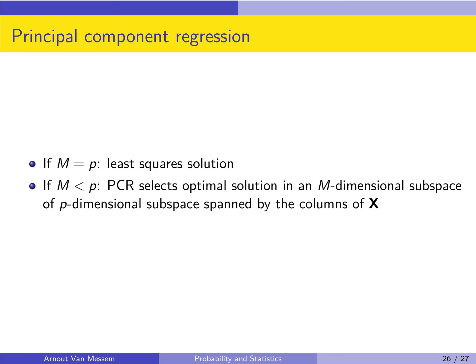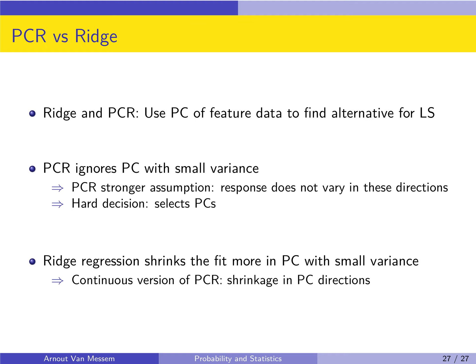If m equals p — we take all principal components with no selection — the solution equals the least squares solution. Otherwise, if m is smaller than p, principal component regression selects an optimal solution in an m-dimensional subspace of the p-dimensional space spanned by the columns of x. Instead of looking for a solution in p dimensions, we look for the best possible solution in m dimensions defined by z1 to zm. A final slide compares principal component regression and ridge regression, but since ridge regression was not covered, that slide can be ignored.